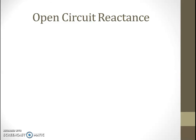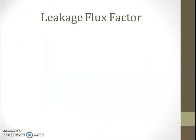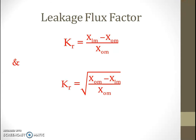Open circuit reactance can be calculated by this equation. Open circuit reactance — when the secondary is open — is X_om, and that equals X_m (magnetizing reactance) plus half of X_lm (total leakage reactance). The leakage flux factor X_r is given by X_lm minus X_om divided by X_om, and K_r is given by the square root of (X_om minus X_lm) divided by X_om.